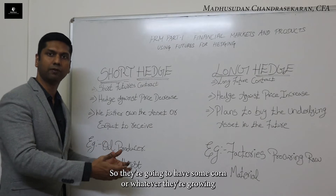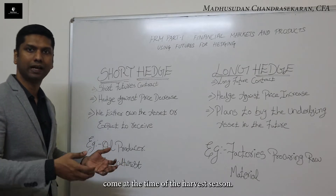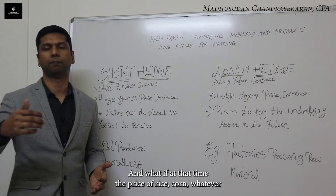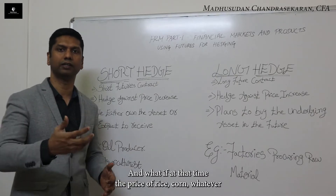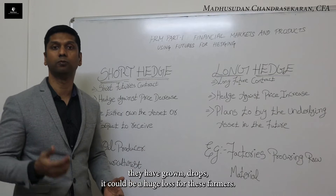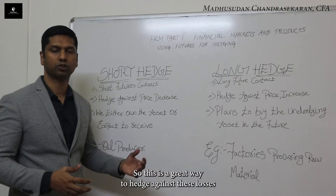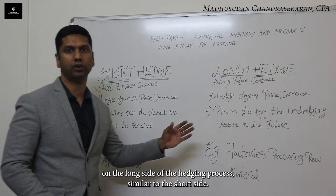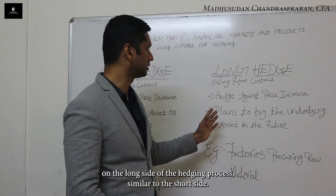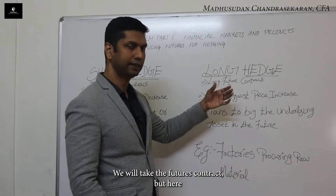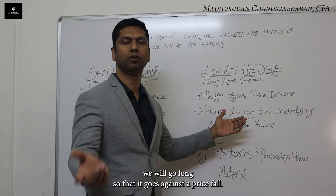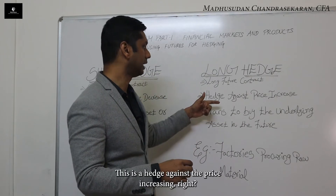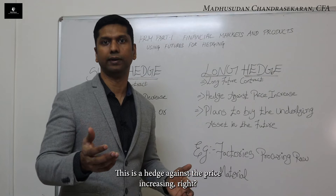Agriculture commodity producers are going to have some corn or whatever they're growing come at the time of harvest season. And what if at that time the price of rice, corn, or whatever they have grown drops? It could be a huge loss for these farmers. So this is a great way to hedge against these losses. On the long side of the hedging process, similar to the short side, we will take the futures contract, but here we would go long — as a hedge against the price increasing.